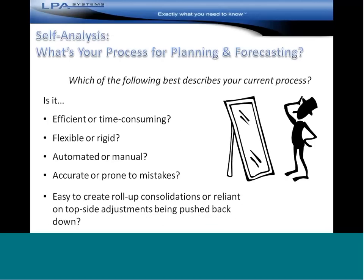So what is your process today for planning and forecasting? Which of the following best describes your current process? Is it very efficient or is it very time-consuming? Is it flexible or is it very rigid and stiff? Is it automated like we all like to have, or is it still manual? Pretty accurate or is it actually prone to mistakes? Is it easy to create roll-up consolidations, or do you rely on topside adjustments being pushed back down — or not at all?